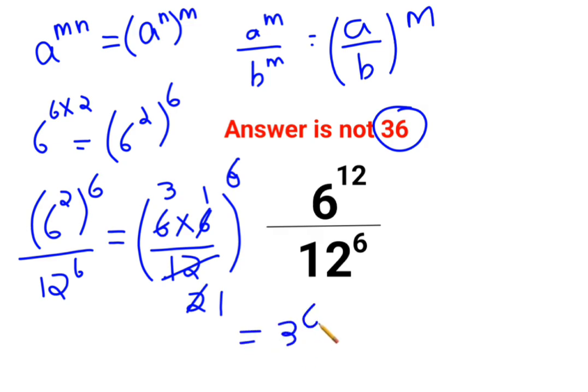coming out to be 3 raised to 6, which is nothing but 729. So the answer for this question is supposed to be 729, or you can even write it in terms of indices which is 3 raised to 6.